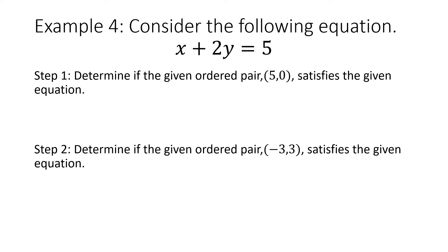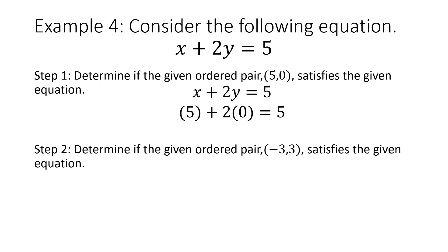Example 4: consider the following equation, x plus 2y equals 5. Step 1: determine if the given ordered pair 5 comma 0 satisfies the given equation. I'm going to substitute in 5 for x and 0 for y to see if it gives me 5. So I have 5 plus 2 times 0 equals 5. 5 plus 0 gives me 5, so 5 equals 5. Yes, 5 comma 0 does satisfy the given equation.